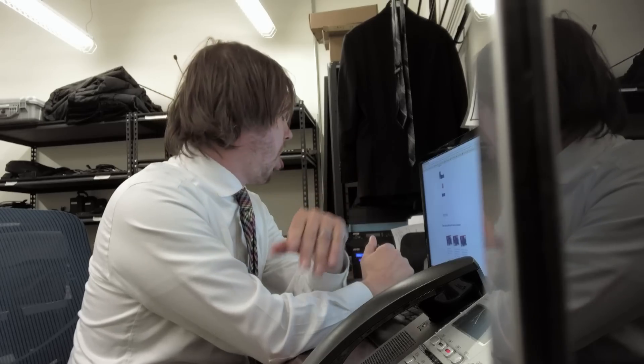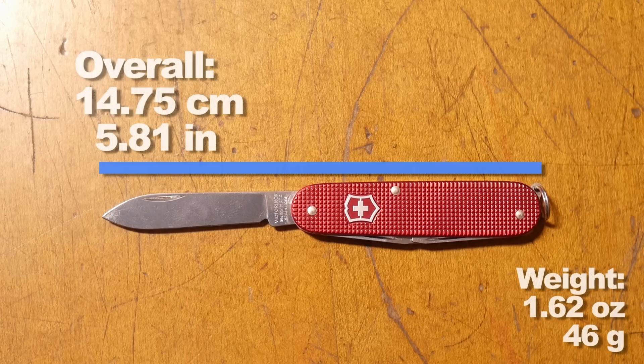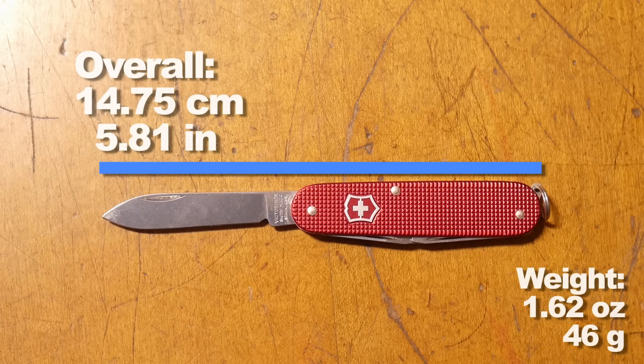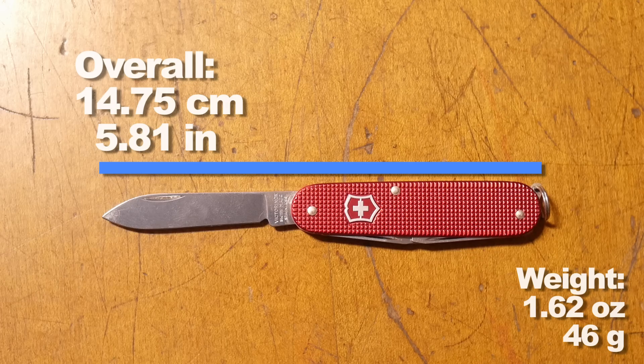So let's take a look at the dimensions of my sack. Like the overall length and weight with the main blade open. Note that Swiss Army Knives are often described in millimeters in reference to their closed length.